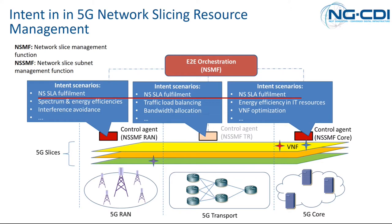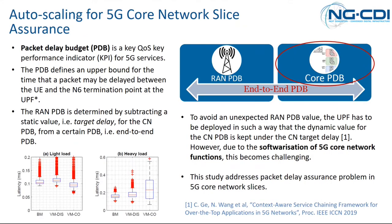At Surrey, we mainly start from the core network because we do have our own core network implementation, which allows us to carry out extensive research activities. This will be further expanded to the transport network as well as the RAN side — we have other teams not involved in the NGCDI project working on both other network environments. The first topic I'm going to discuss is auto-scaling for 5G core network slice assurance. My colleague Abdelazak from 5GIC delivered a more detailed technical talk several weeks ago on this topic, so I'm going to briefly introduce this work.